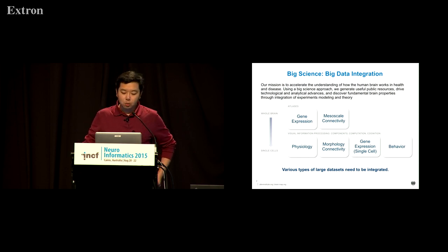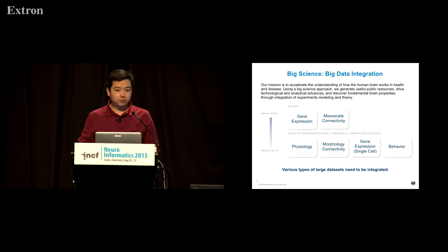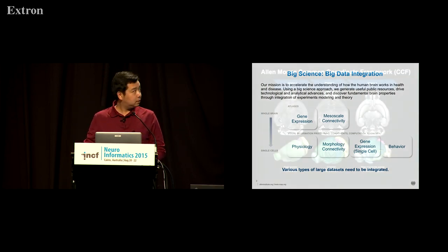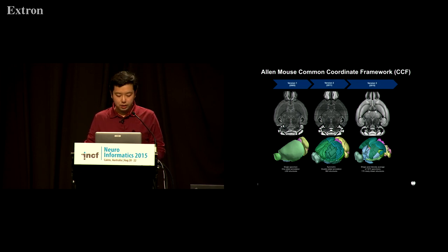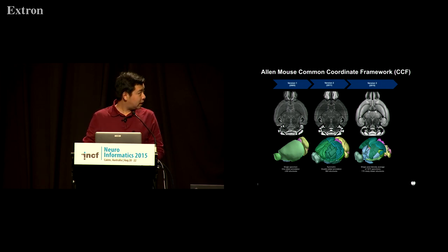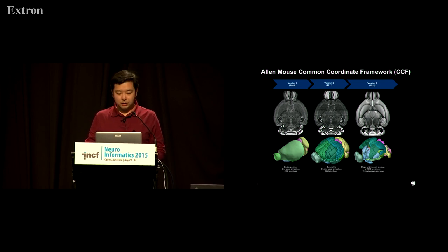More importantly, once this is done, we are going to be able to compile and analyze differences from different subjects or even from different modalities. This is why in 2005 we built our first version of a common coordinate framework. That version was built based on one single specimen using Nissl staining. The second major revision was in 2011, when we made the atlas symmetric and added deeper label annotation structures.